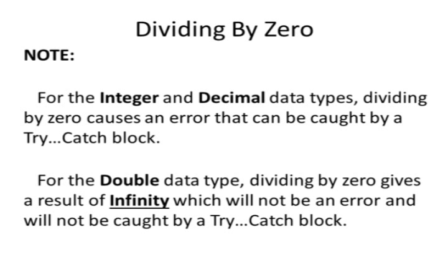Here is an interesting note about dividing by zero. For integers and decimal data types, dividing by zero causes an error that can be caught by the try-catch block. However, for double data types, dividing by zero gives a result of infinity, which will not be an error and will not be caught by a try-catch block.